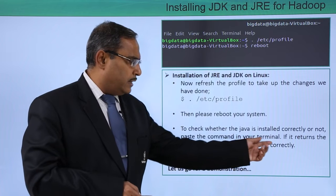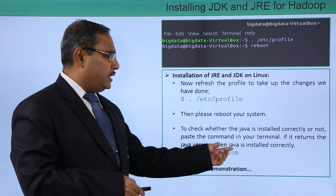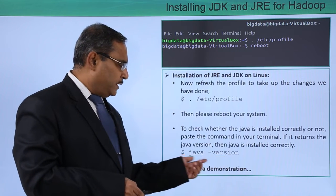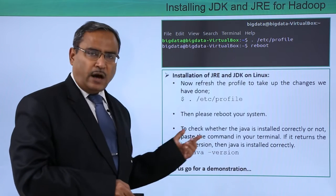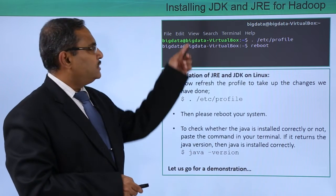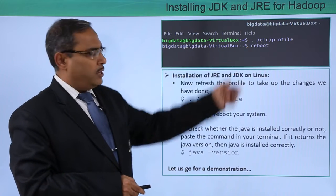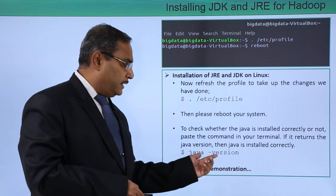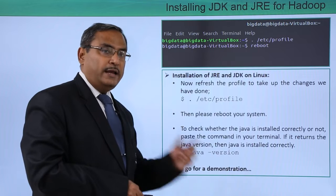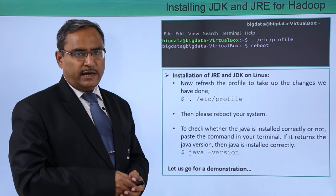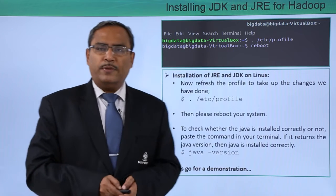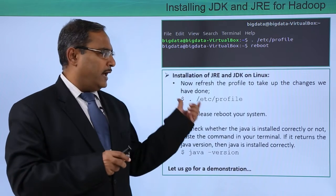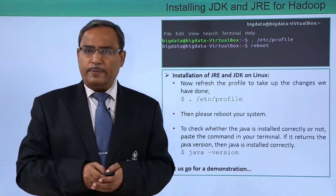Paste the command in your terminal and if it returns the Java version, then Java is installed correctly. Type: java -version. If you see the output coming, that means Java has loaded successfully on your system. After rebooting, open a terminal and run java -version. If the Java version is displayed correctly, your Java has loaded successfully.